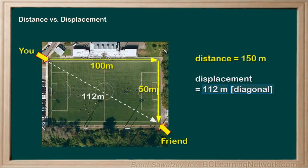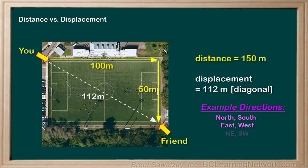In the previous example, the direction we gave was east. In this situation, the direction could be diagonally across the field. There are lots of ways of specifying a direction. Directions can be north, south, east, west, northeast, southwest, as well as upstream, downstream, up and down — whatever signifies a direction. In some cases, we just indicate direction using positives and negatives. We'll take a look at an example of this in the next video.